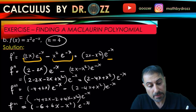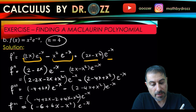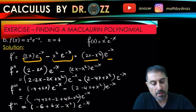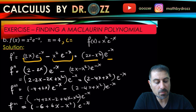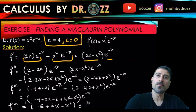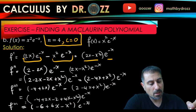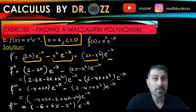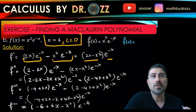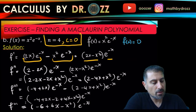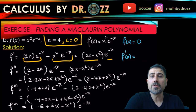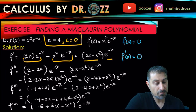Now we have all derivatives up to order four, so let's evaluate them at zero. f(x) = x squared times e to the minus x, and c equals zero. f(0) equals zero because zero squared times e to the zero is zero. f prime of zero: we have (2x minus x squared) times e to the minus x — plugging in zero gives zero as well.